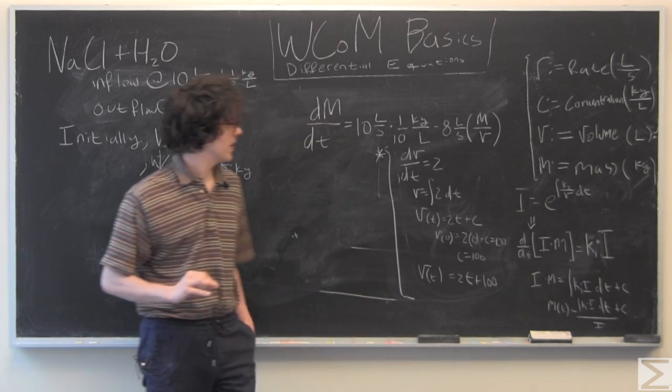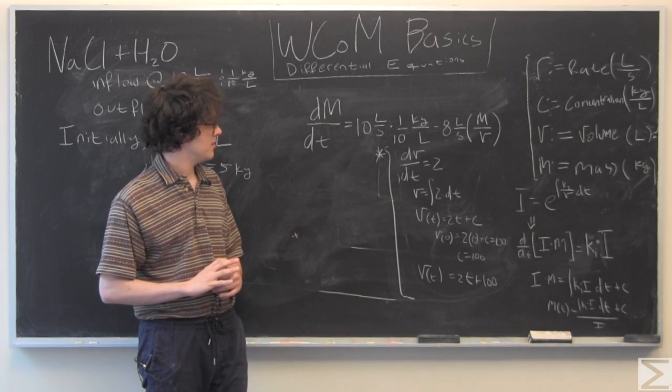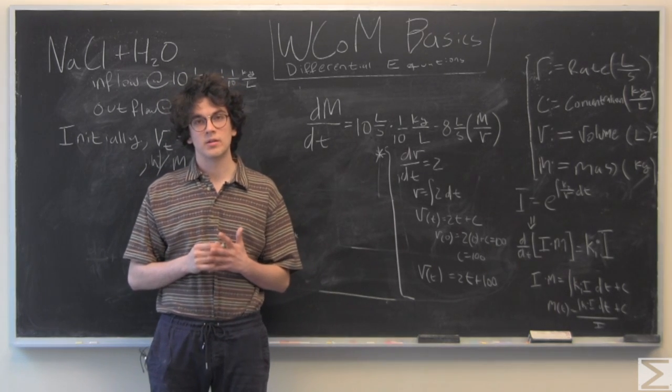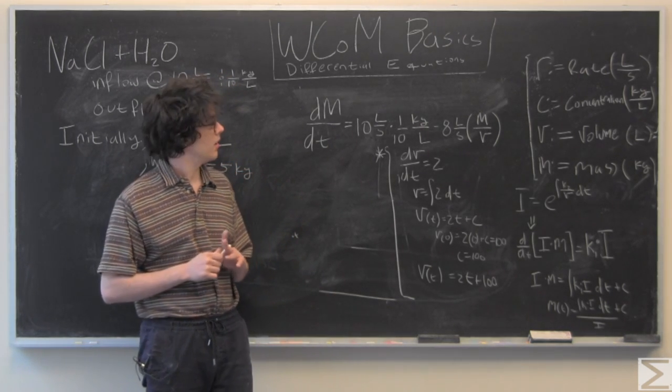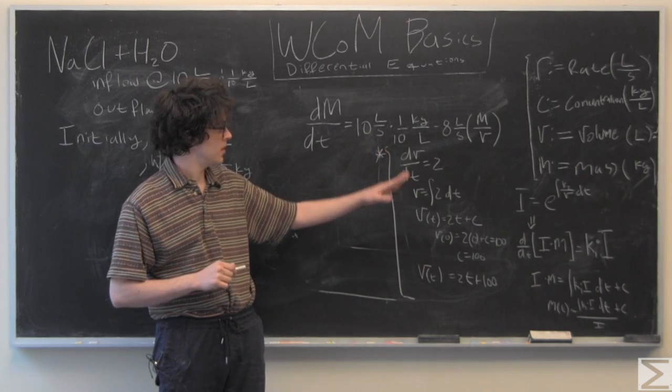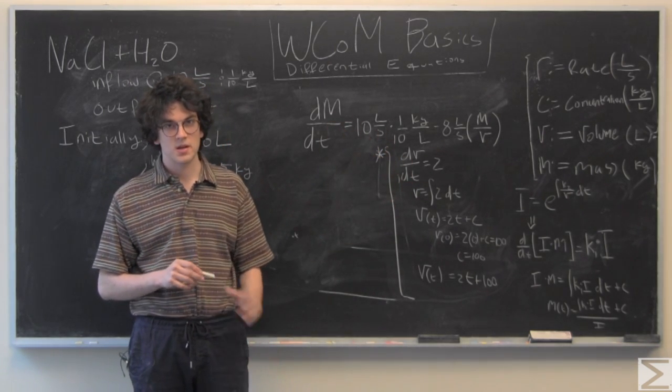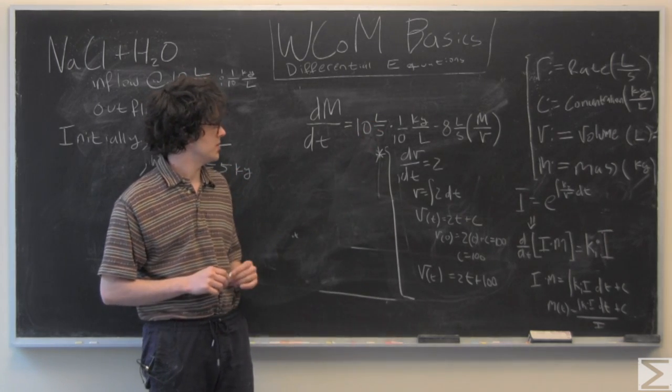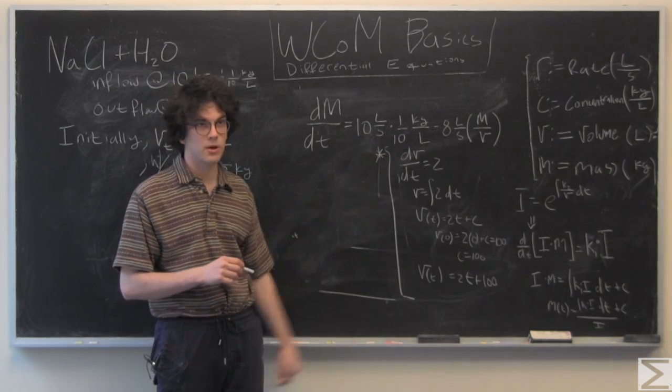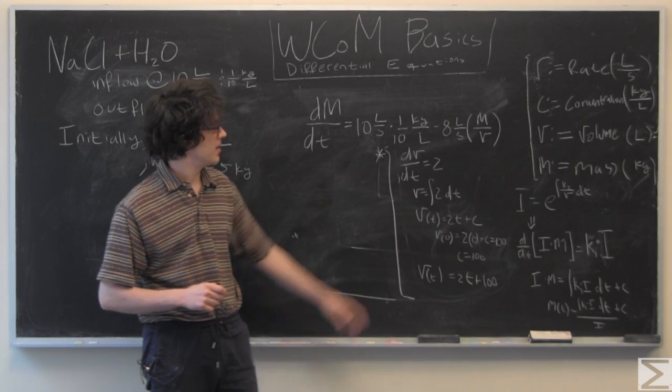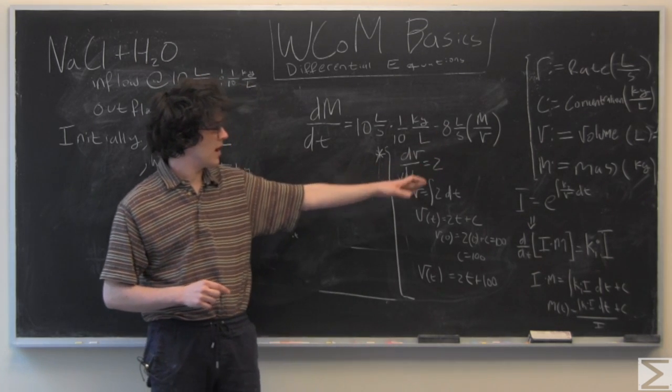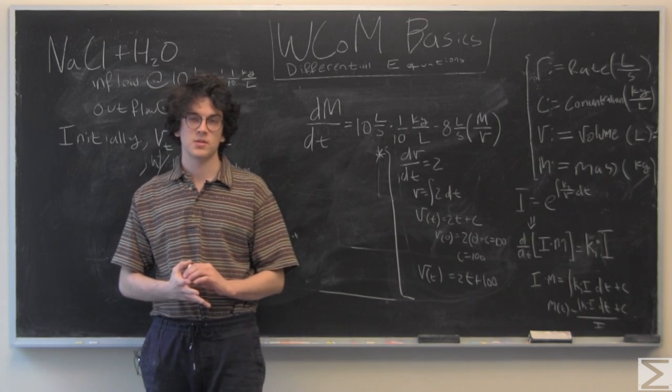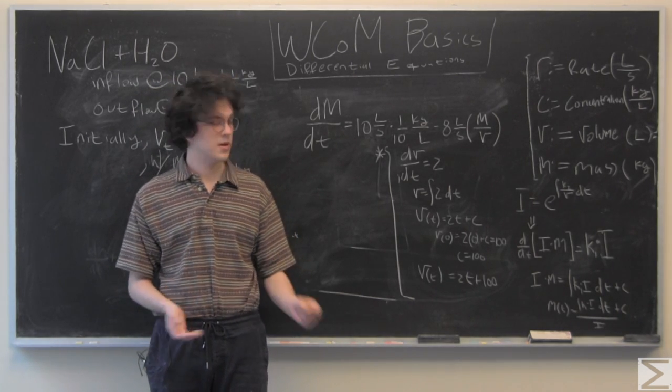So, we have dm dt, and I've just went ahead and plugged in rn times cn, which is going to end up to be 1, but I just want you to see how the units interact with each other. So, you're just going to get kilograms per second there. Minus r out, which is 8, times mass over volume, which is the concentration coming out.